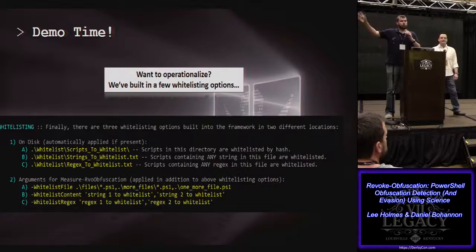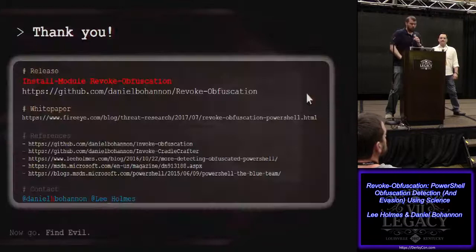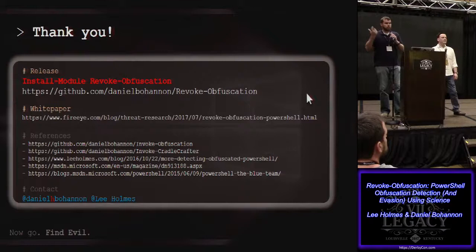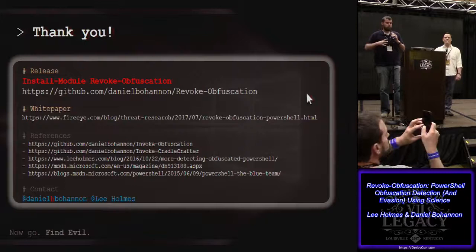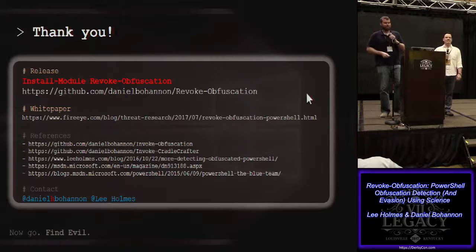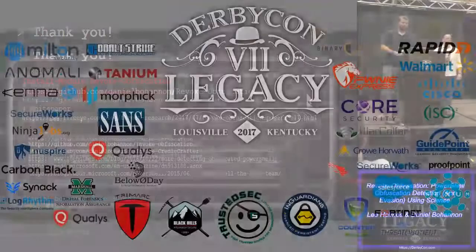We want this to be useful operationally, so we built in many ways to whitelist content. As you operationalize it, when you review flagged scripts and confirm they're good, drag them into a whitelisting directory and you're set. To get Revoke-Obfuscation: it's on GitHub at revoke-obfuscation, or just run install-module revoke-obfuscation from any PowerShell prompt — within 30 seconds you can be installed and ready to go. We also released a white paper associated with this research. Thank you very much for your attention, please find us and ask questions.